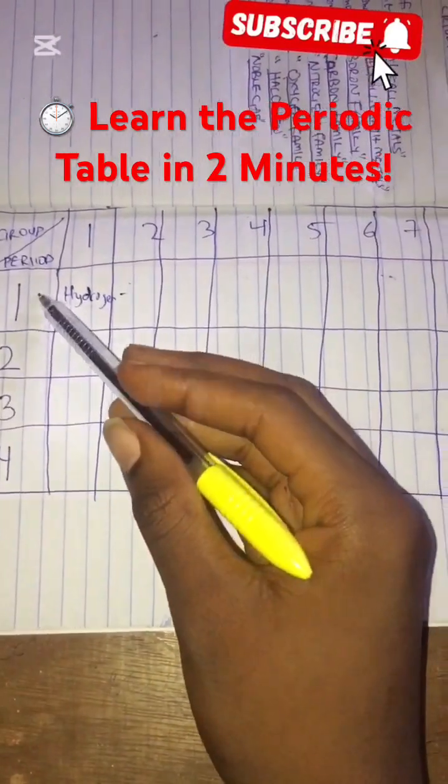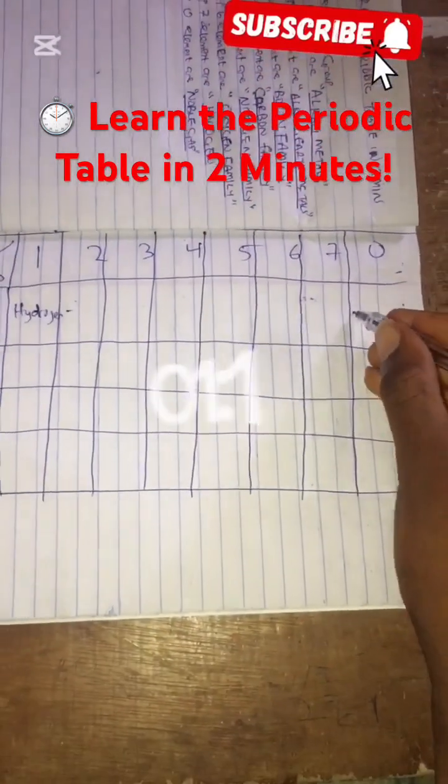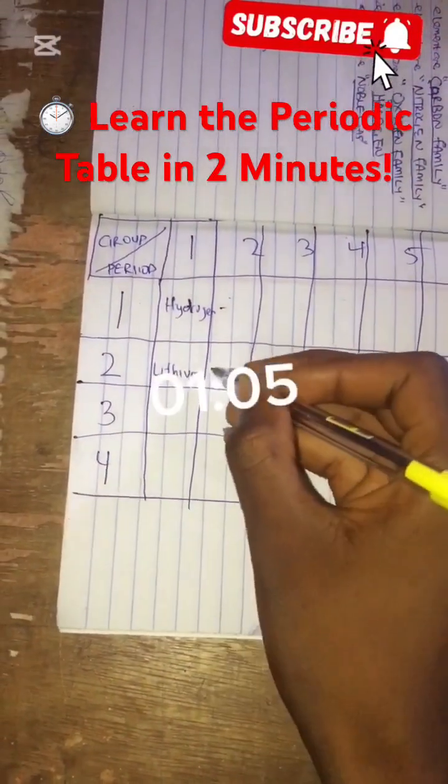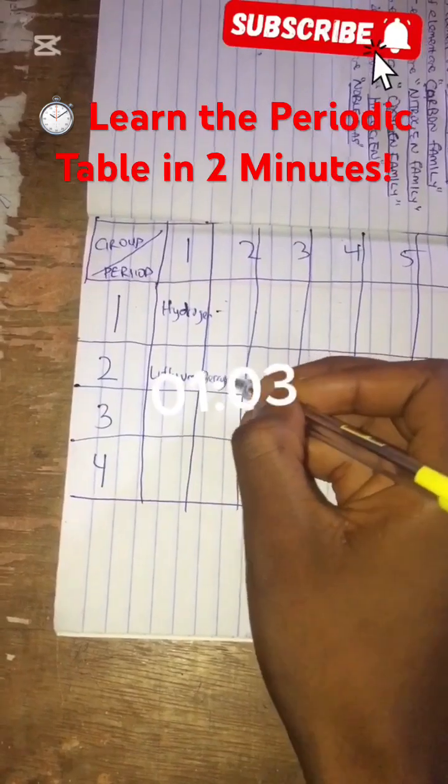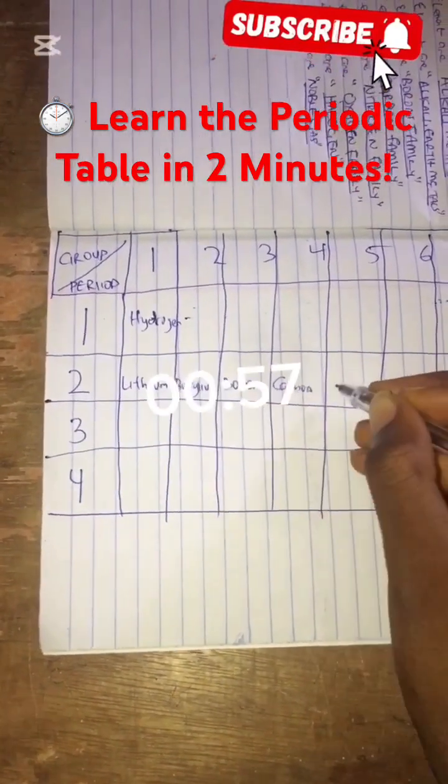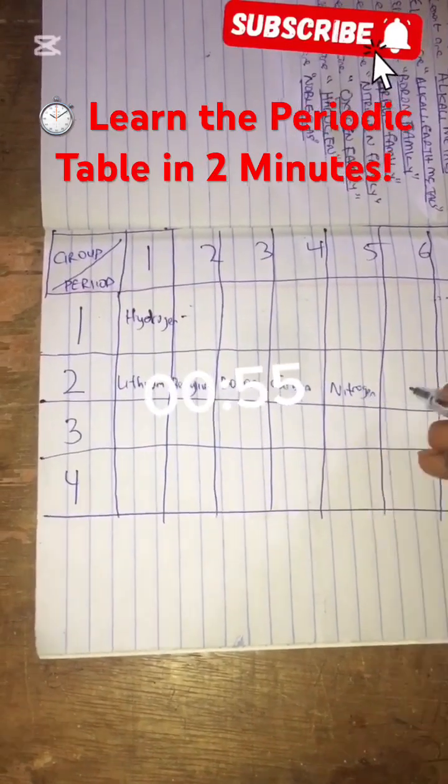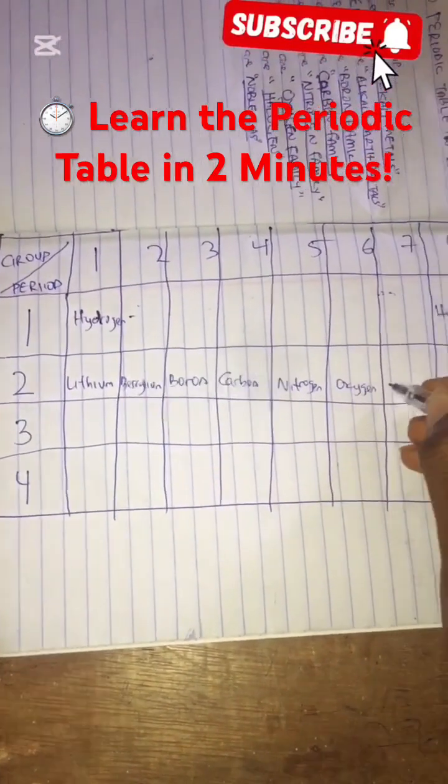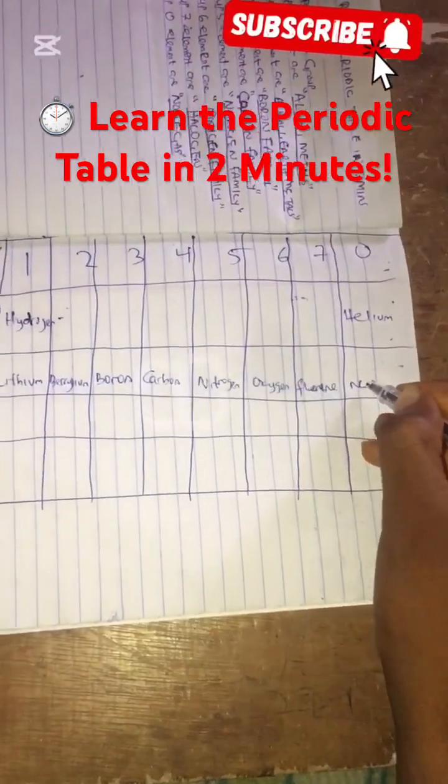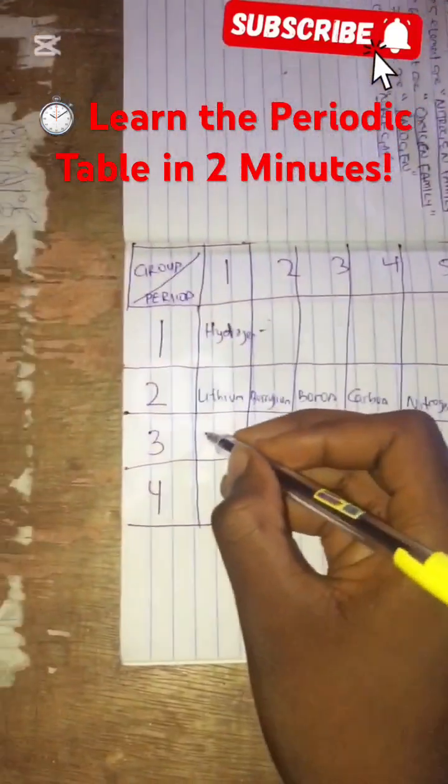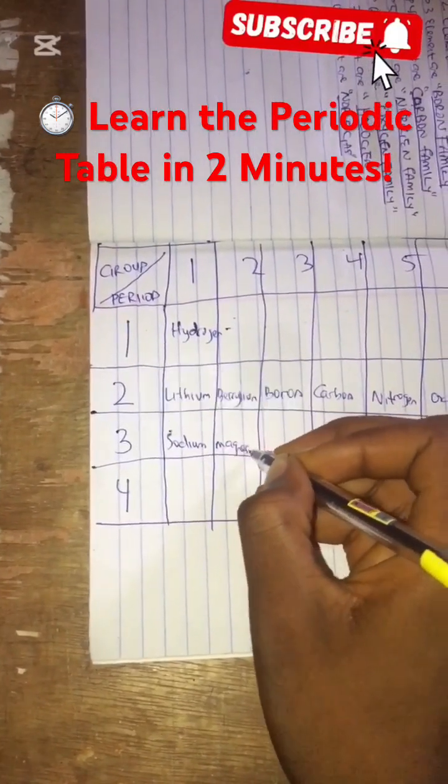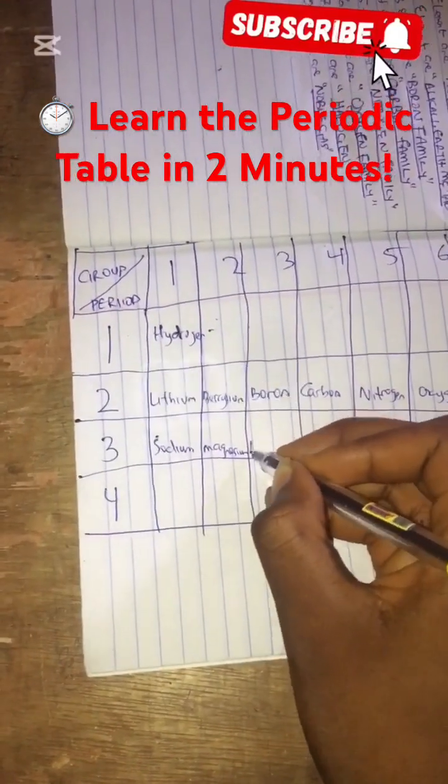Hydrogen, helium, lithium, beryllium, boron, carbon, nitrogen, oxygen, fluorine, neon, sodium, magnesium, aluminum.